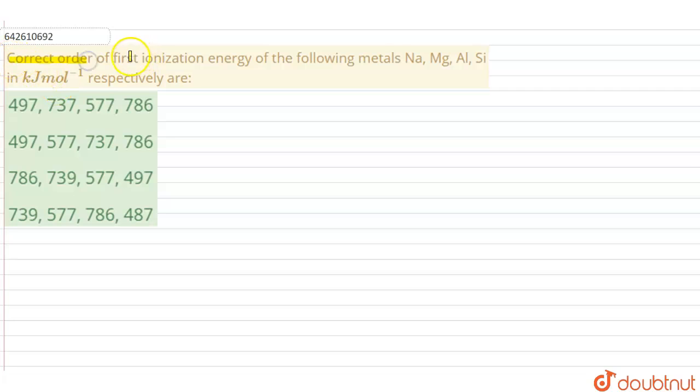Correct order of first ionization energy of the following metals: sodium, magnesium, aluminium, silicon in kilojoules per mole respectively are: